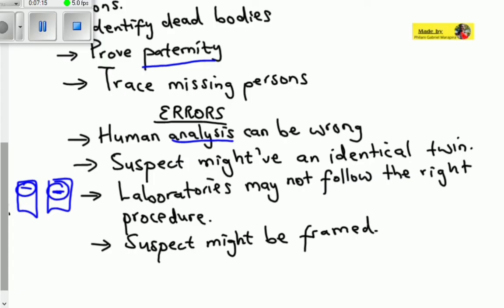The third error is laboratories may not follow the right procedure. Many laboratories use different methods of obtaining DNA and determining the DNA profile of an individual. If a laboratory does not follow the right procedure, they might interpret a wrong result.